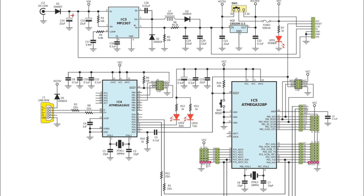Here we have another ceramic capacitor connected to a diode and also connected to a coil. Note this capacitor is NOT connected to the nearby resistor — there is no dot at that intersection, meaning those wires are not connected. The anode of this diode is connected to ground.